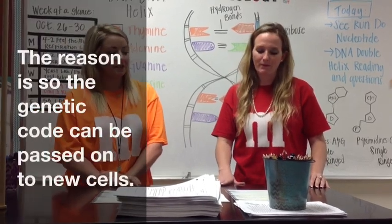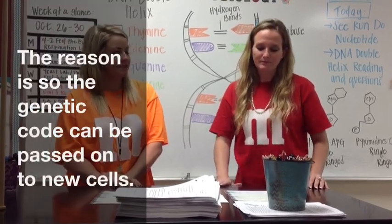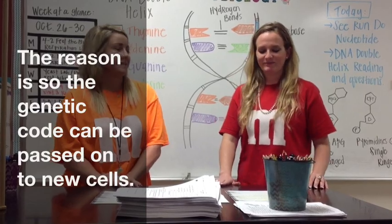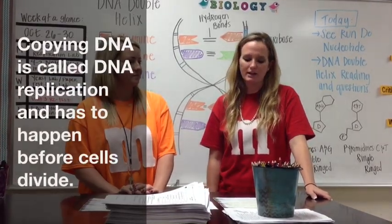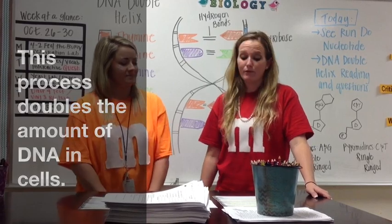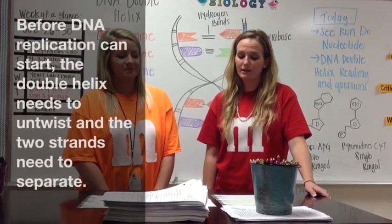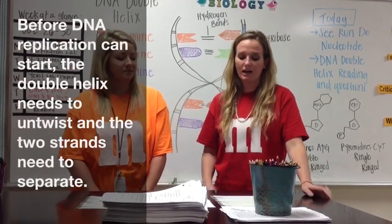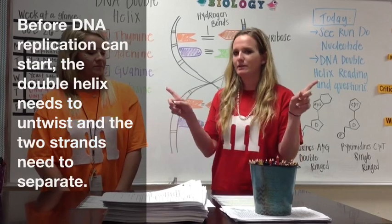So this process of making new cells is called cell division? Tell me more about how DNA is copied. Well, copying DNA is called DNA replication and has to happen before cells divide. This process doubles the amount of DNA in cells. DNA has the structure of a double helix or twisted ladder. Before DNA replication can start, the double helix needs to untwist and the two strands need to be separated.